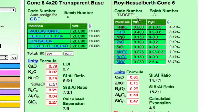Now on the right here we're looking at a typical cone 6 limit formula, and here we have the amount and the range. So for example, for calcium oxide, the average would be 0.4 or it could be within a range of 0.2 to 0.6.